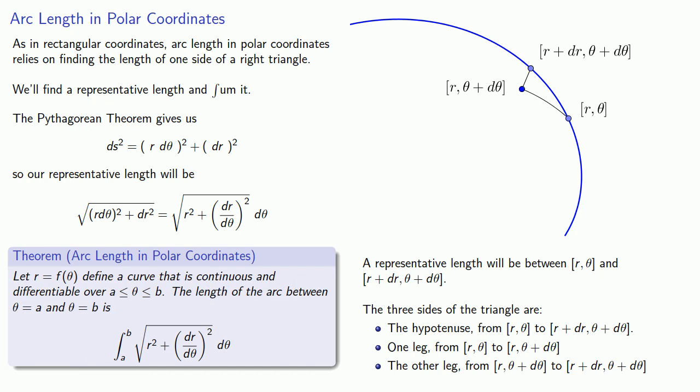Let r equals f of θ define a curve that is continuous and differentiable over some interval. The length of the arc between θ equals a and θ equals b is going to be given by the definite integral from a to b of the square root of r² plus (dr/dθ)².